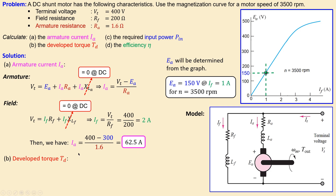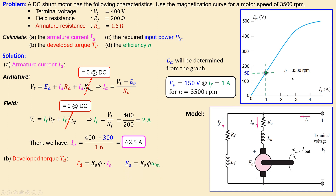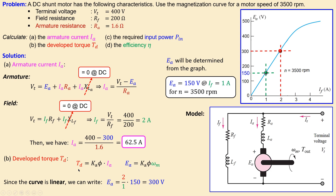Let's now look at the developed torque. The developed torque is given by the motor constant times the armature current. We don't know the motor constant yet, but we can calculate it using the equation for back EMF: the back EMF equals the motor constant times the rotation speed in radians per second. Since the curve is linear, the back EMF is 300 volts, and we need to use this along with the motor speed to calculate the developed torque.